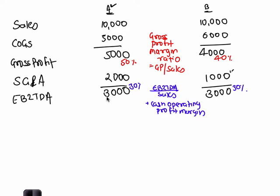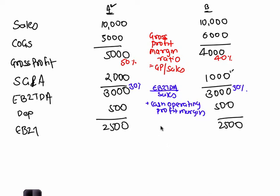Then next item. Depreciation. Let's say 500 and 500. That will give us EBIT of 2,500 and 2,500. Again we will calculate one more new ratio. This time we will call that ratio as operating profit margin and operating profit margin would be calculated as EBIT divided by sales. Both the cases ratio would be same. So as far as overall operating efficiency is concerned, both A and B is same. Now there is some difference in their cost structure. A is more smarter manufacturer. B is more efficient at the overall operations. But their overall operating profit margin numbers are exactly same.